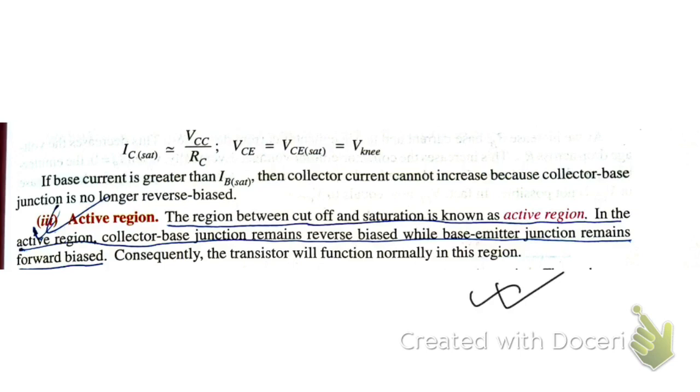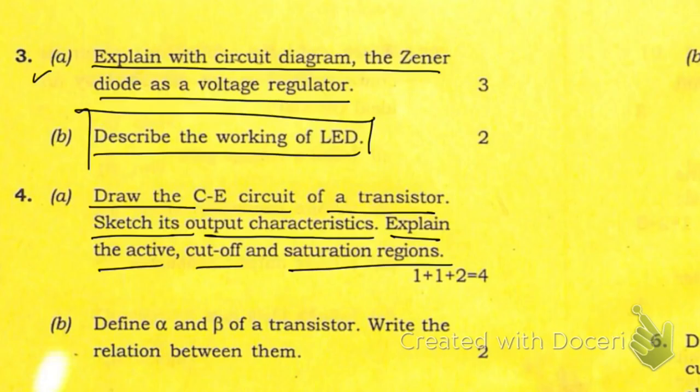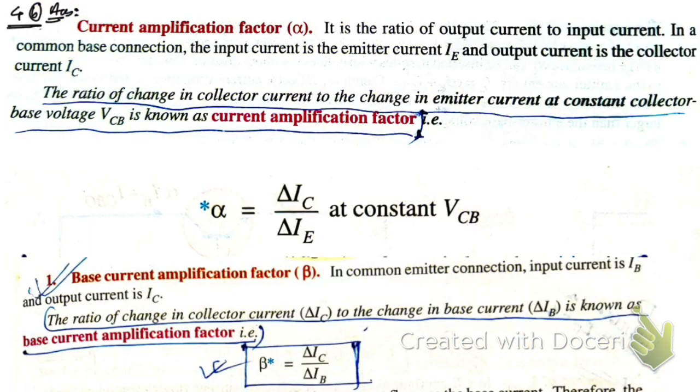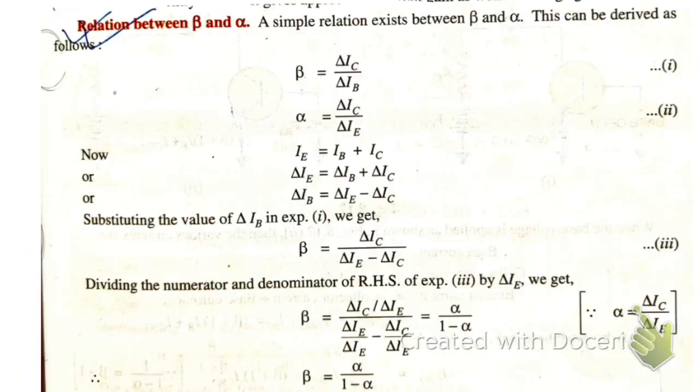Now let's move on to the next question. Question 4b: Define alpha and beta of a transistor and write the relation between them. Here is the answer to question 4b. This is the definition of alpha, this is the definition of beta. Take the screenshot. Here is the relation between alpha and beta. This is the required relation.